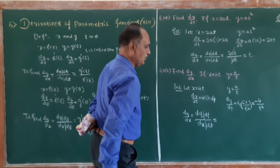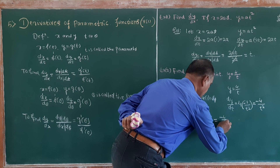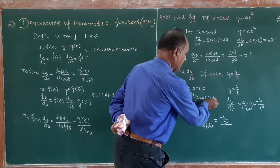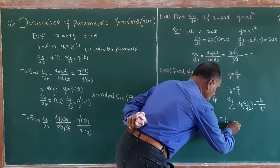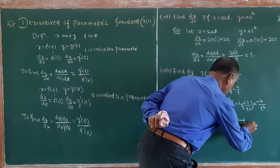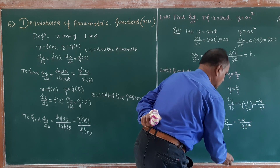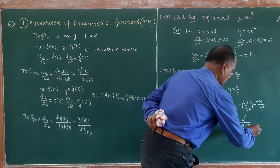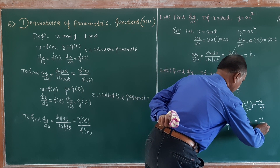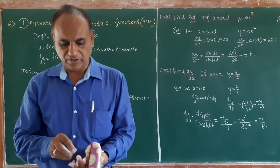Substituting the values: dy/dt is minus 4/t squared and dx/dt is 4. So dy/dx equals (−4/t²) divided by 4. The 4 cancels, giving dy/dx equal to minus 1 divided by t squared.